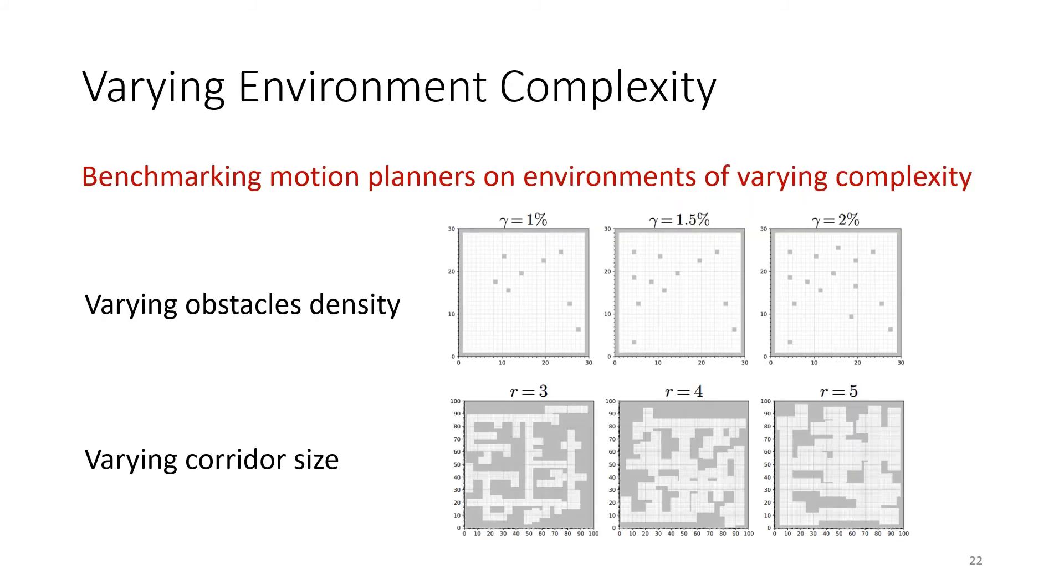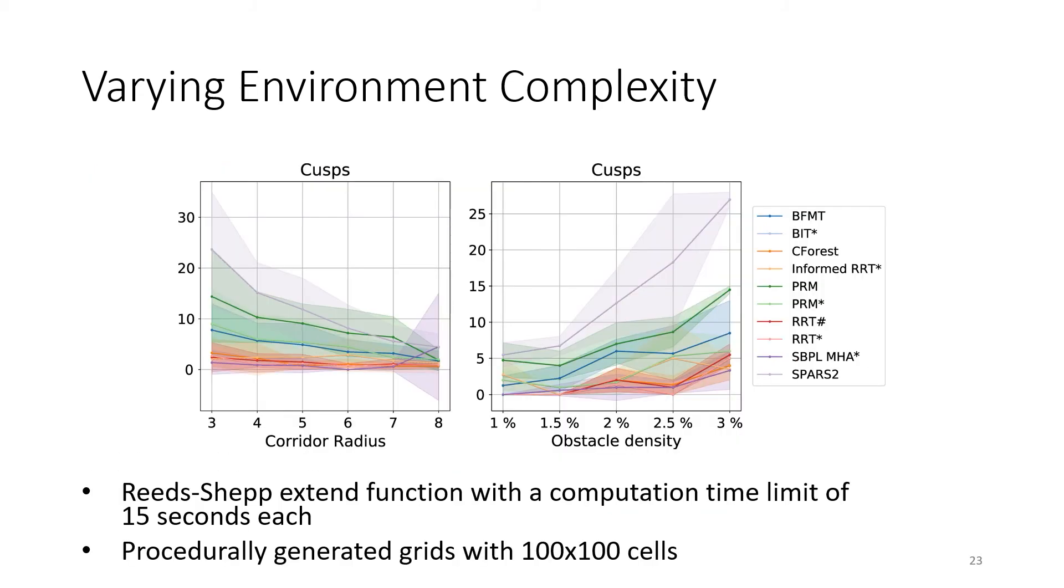In another experiment, we benchmark the motion planners on environments of varying complexity. We investigate how different planners perform by varying the obstacle density or the width of the corridors in indoor-like environments. As an example, we plot how the number of cusps of the paths of different motion planning algorithms using the Reeds-Shepp steer function vary with the environment complexity. Here, we change the minimum corridor width for random indoor-like grid-based environments and the percentage of blocked cells for random grids.